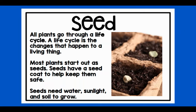Seed. All plants go through a life cycle. A life cycle is the change that happens to a living thing. Most plants start out as seeds. Seeds have a seed coat to help keep them safe. Seeds need water, sunlight, and soil to grow.